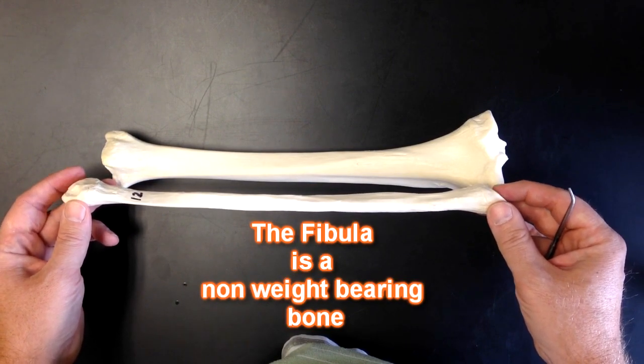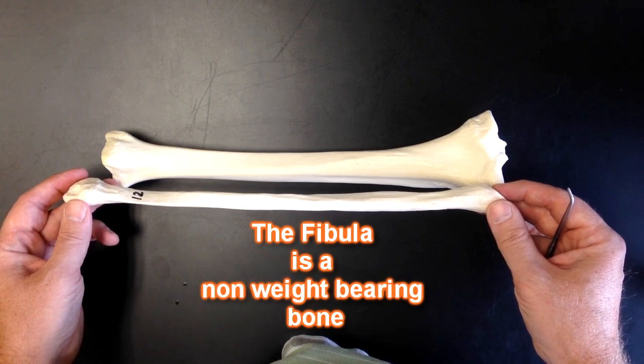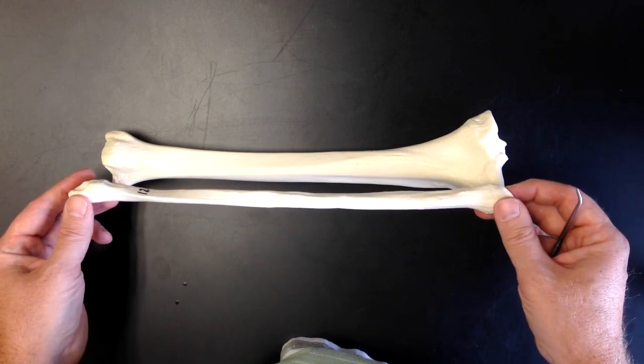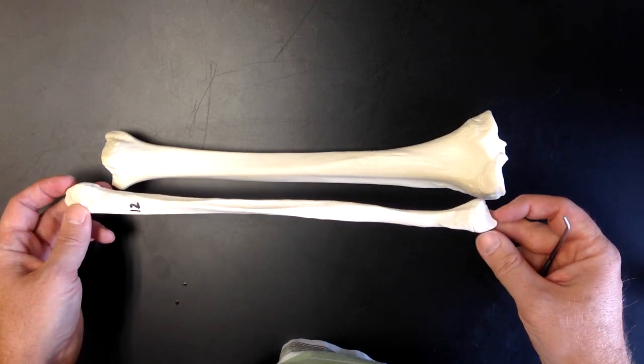That's because this fibula is a non-weight bearing bone. Oftentimes when you hear an athlete breaks his leg but still plays in the game, they've broken their fibula. Again, because it's a non-weight bearing bone.